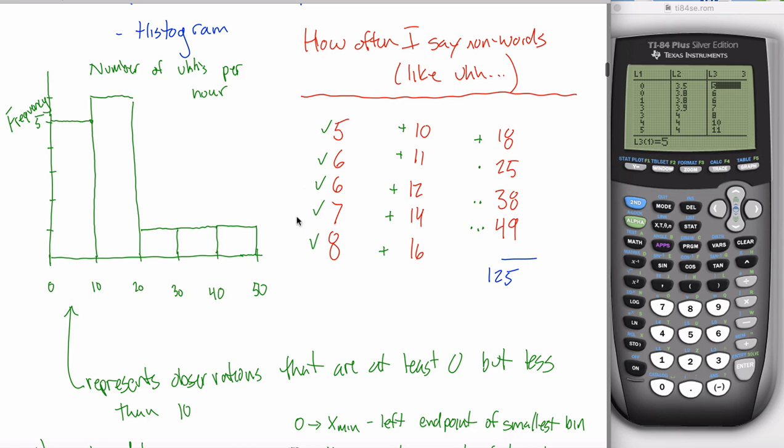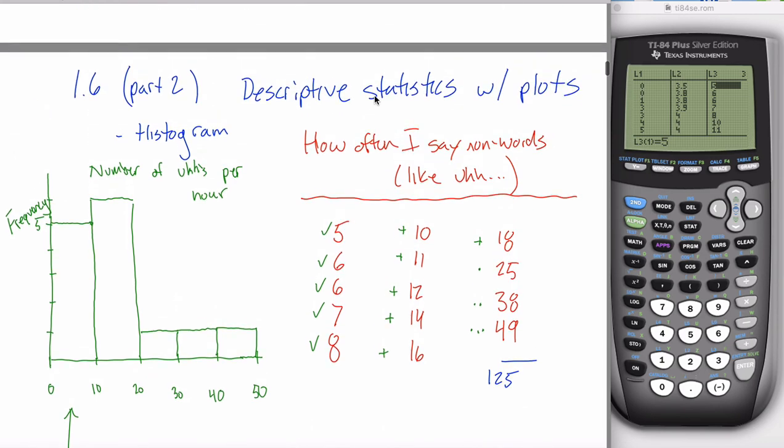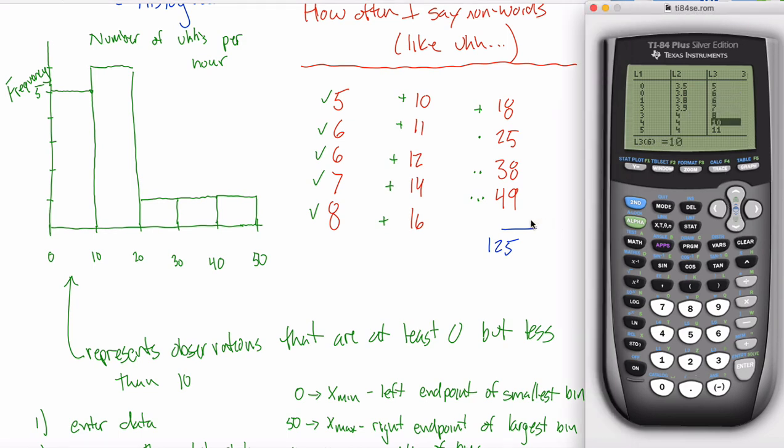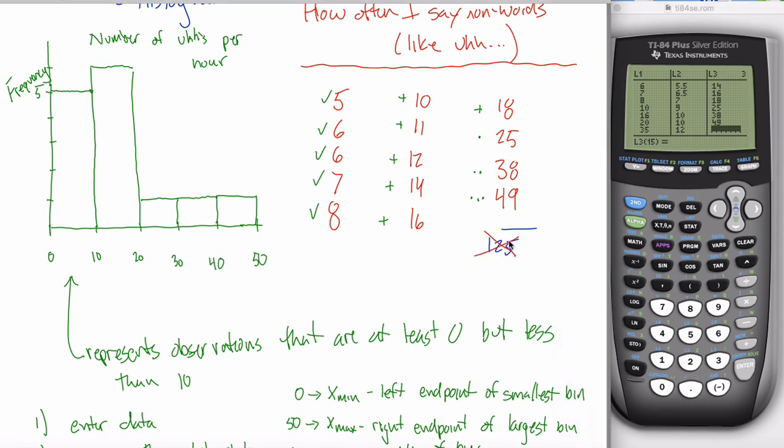So while we're making this box plot, I'm going to use this same data: the number of non-words that I say in a given hour. I have this data. We put it into L3 in a previous video. Note that this 125 was just for the sake of talking about. It's not actually an observation in our data set. Our data set just has 14 observations, so this one is not in there.